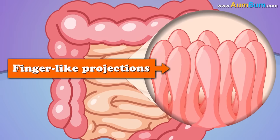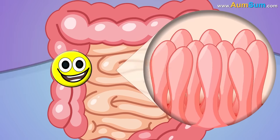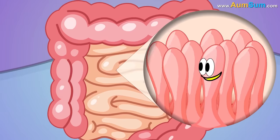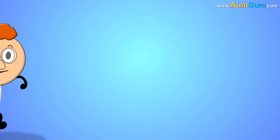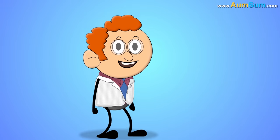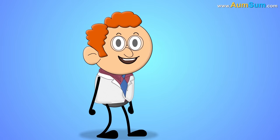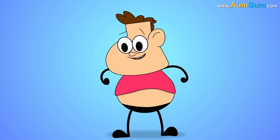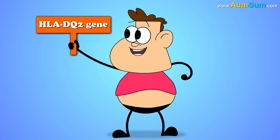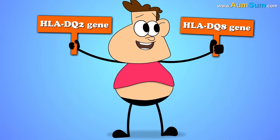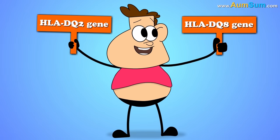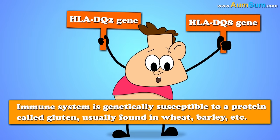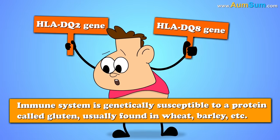Villi are small finger-like projections which help in efficient absorption of nutrients. Now, according to experts, the main culprits behind celiac disease are our genes. If a person has the HLADQ2 gene or HLADQ8 gene, then his immune system is genetically susceptible to a protein called gluten.